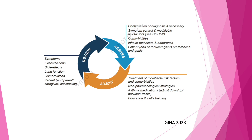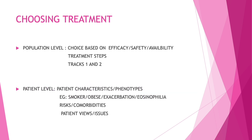Asthma management really revolves around evolving the treatment based on your individual patient and the various modifiable factors and treatable traits. This also involves assessing the patient, adjusting treatment based on his response, his risk factors and problems, as well as reviewing his treatment, exacerbations, and side effects in future visits.